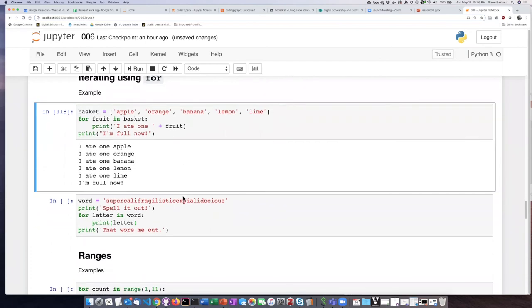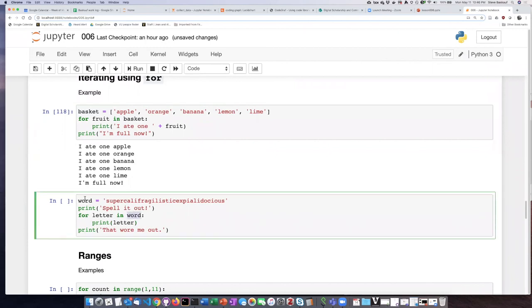Now here is an example of iterating through a string. So here's a very long string. If we iterate through the string, which I've called word, it will first, the first time it does the loop, it'll do S. Then the second time it does the loop, it'll do U, the third time it'll do P, and so on until it's gone through all the letters in the string.